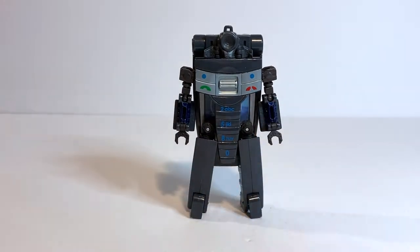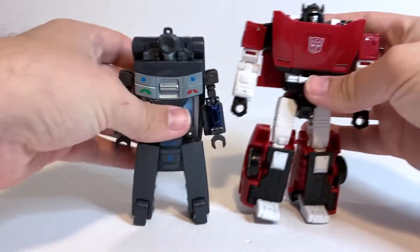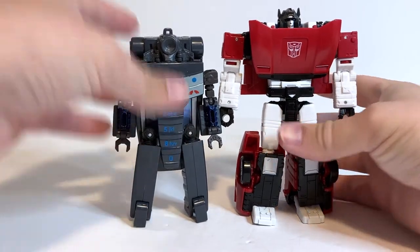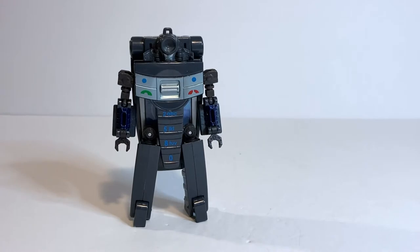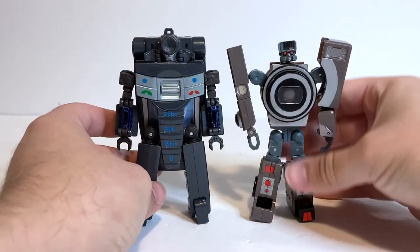In terms of size comparisons, just for the standard one, here he is with Kingdom Sideswipe. Just so you can see what he looks like with an average size modern deluxe. A little shorter. Like I said last time, they're kind of in between Scout class and deluxe figures for the time. Here he is again with Spy Shot 6. Just so you can see what the two of them look like together.